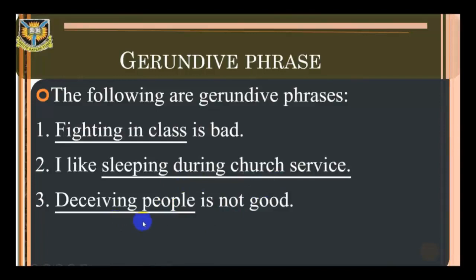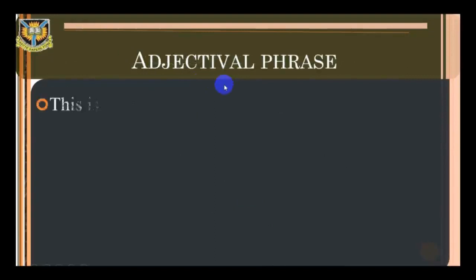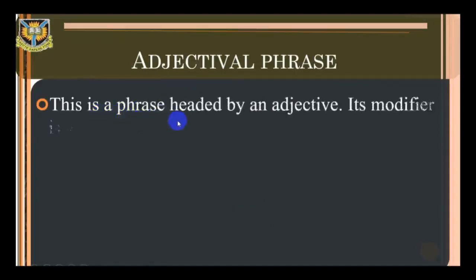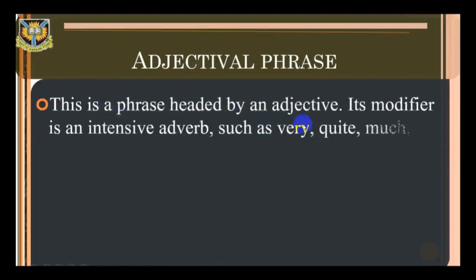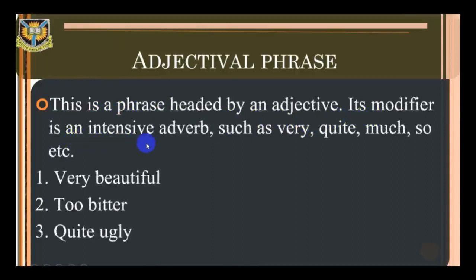'Deceiving people is not good' — 'deceiving people' is a gerund phrase. Adjectival phrase: this is a phrase headed by an adjective. Its modifier is an intensive adverb such as very, quite, much, so, and so on.